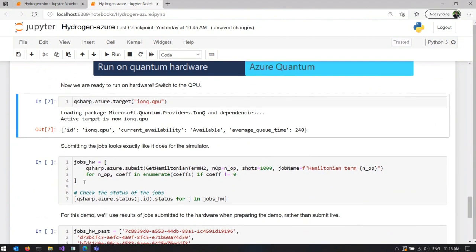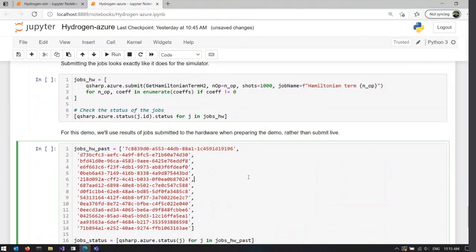After this, submitting the jobs looks exactly the same like we did it for the simulator. I could be running the previous cell model instead of defining a new one. Now, in the interest of time, I'm not going to submit those jobs. Instead, I'm going to use the jobs that we ran when preparing the demo.